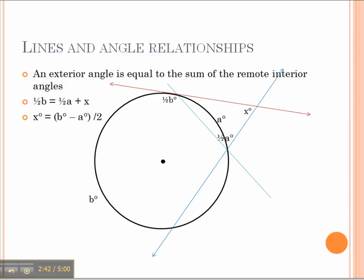And the same relationship can then be shown between a tangent line and a secant line. Because once again, with the green line, we've created two inscribed angles, and then an exterior angle of a triangle.